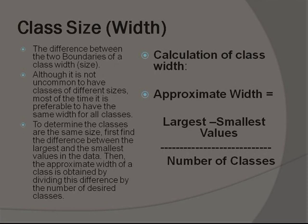Here is an example of a calculation of class width. Approximate class width equals largest minus smallest values divided by the number of classes.